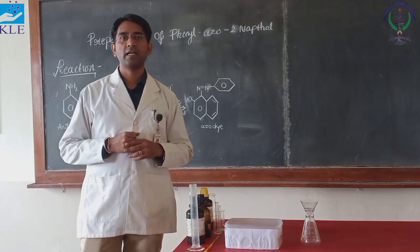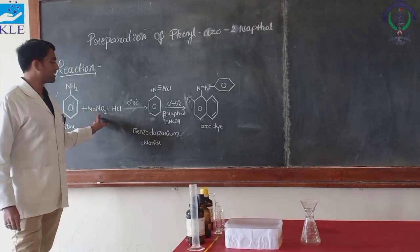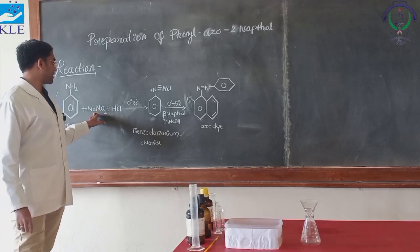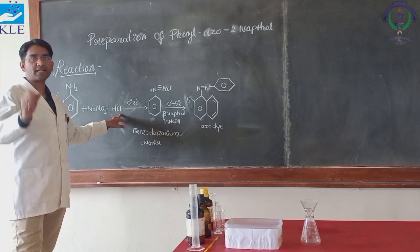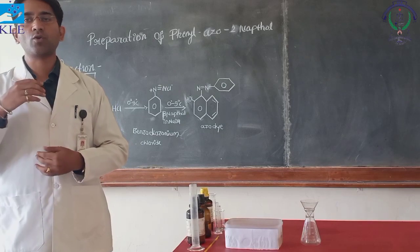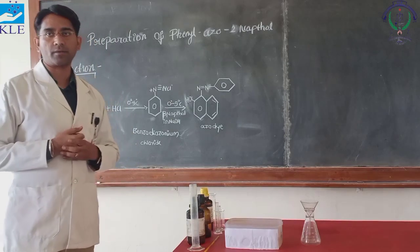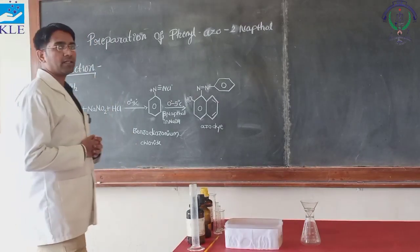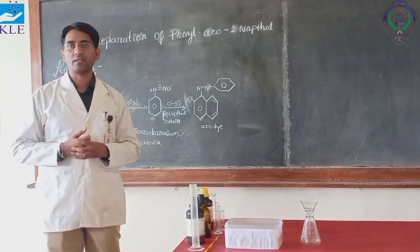How does this nitrous acid form? This nitrous acid is formed due to the reaction between sodium nitrite and hydrochloric acid, which is a mineral acid. When there is a reaction between sodium nitrite and hydrochloric acid, there is a formation of nitrous acid. This nitrous acid will further undergo a rearrangement reaction where it releases the nitronium ion, which will then react with any type of phenol.